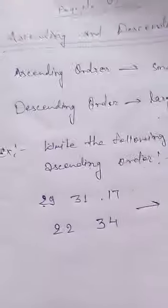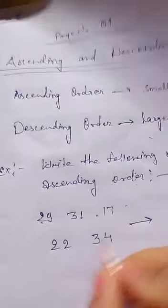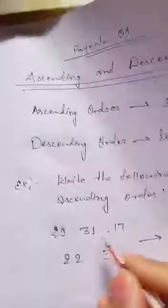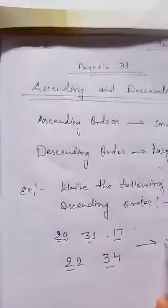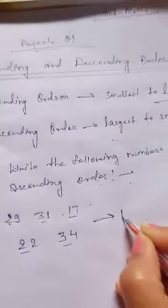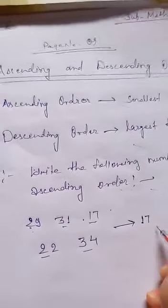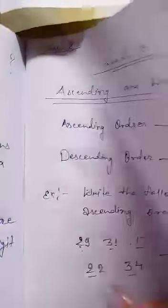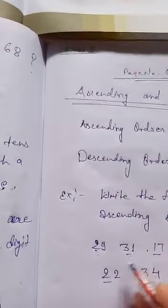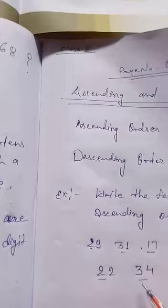Now we are going to arrange in ascending order. Smallest to largest means firstly we write the smallest digit. We have 29, 31, 17, 22, and 34. Here, 17 is the smallest number, so we write 17 first. Then we see the remaining numbers: 31, 29, 22, and 34.